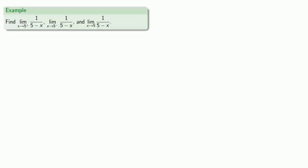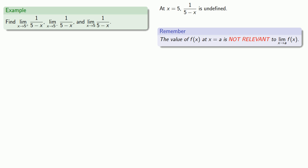Let's look at the limit as x approaches 5 from above of 1 over (5 minus x), the limit as x approaches 5 from below, and the limit as x approaches 5. At x equals 5, 1 over (5 minus x) is undefined, but the value of f(x) at x equals a is not relevant to the limit as x approaches a.